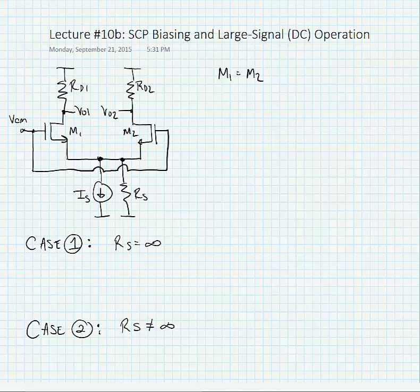Examining the source coupled pair that we were just looking at in the last set of slides, we're going to start by assuming that the transistors and the resistances M1, M2, and RD1 and RD2 are equivalent.